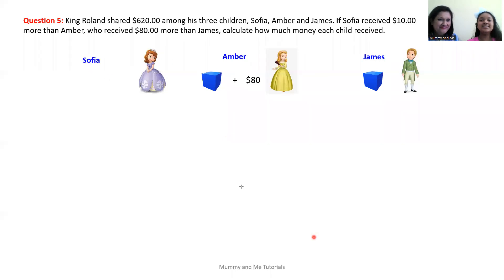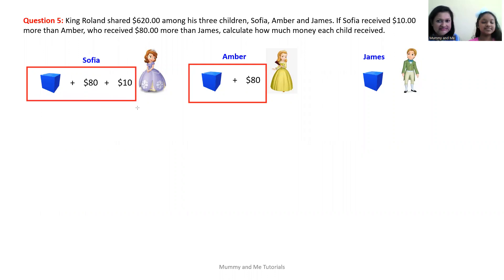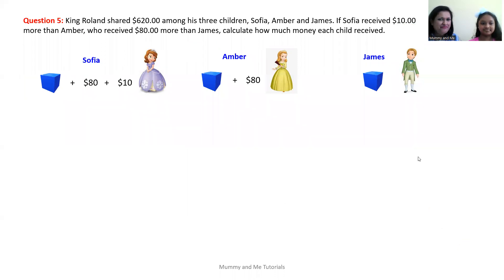And how much money did Sophia receive? Sophia received $10 more than Amber. So if Amber received box plus $80, Sophia received Amber's amount plus an additional $10. And poor James just received an unknown amount. We need to calculate how much money James, Amber, and Sophia each receive.